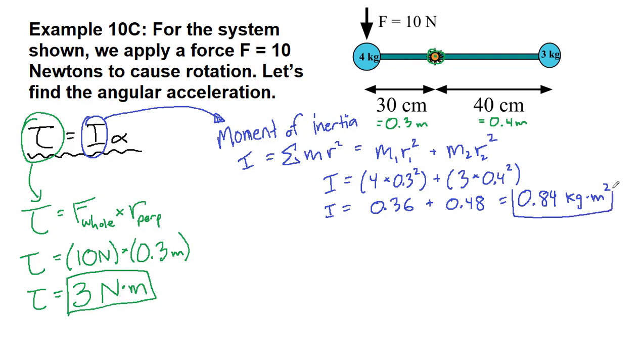So these two pieces are going to be essential in plugging into our new tool from before. We're looking for this moment of inertia I. So we have this equation, torque equals I alpha, and we want to plug in the pieces that we have. So torque is 3 newton meters.